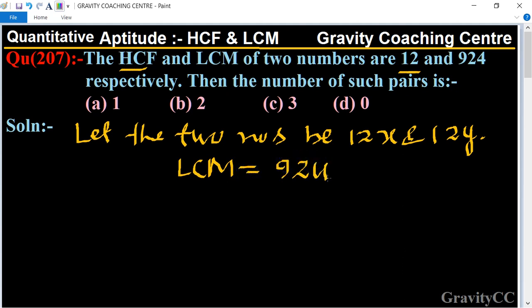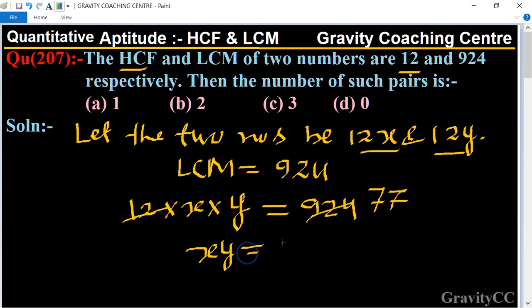And LCM of 12x and 12y is 12 times x times y equal to 924. Here 924 is cancelled by 12, so it will become 77. So xy equal to 77.